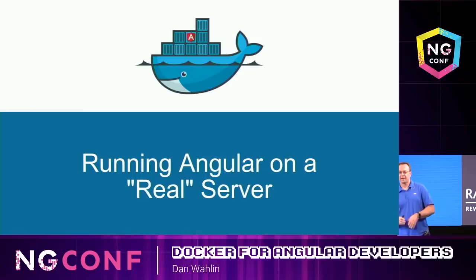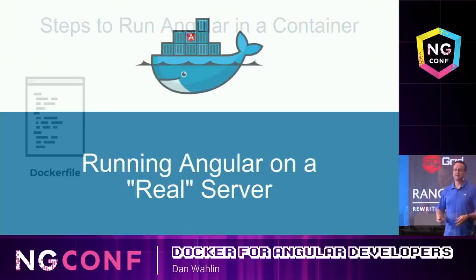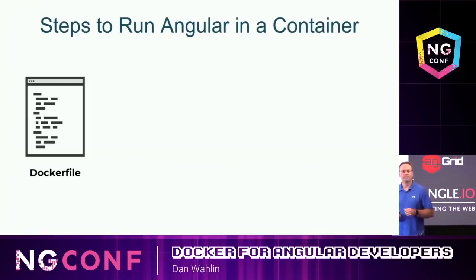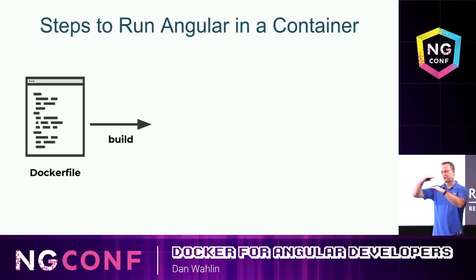So how would you run Angular on a real server? You've done ng-serve and it works, but you actually want to run it for real. One way to do this is to make a custom Dockerfile. In the Dockerfile instructions, you copy the dist folder into the image — that adds it to this 'chocolate cake' layer.